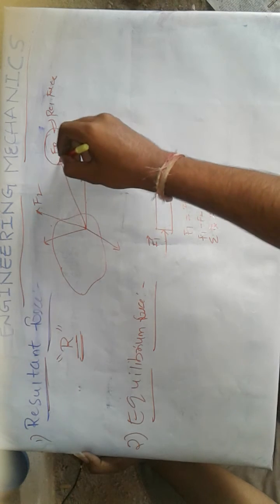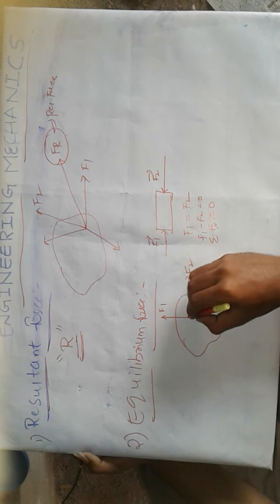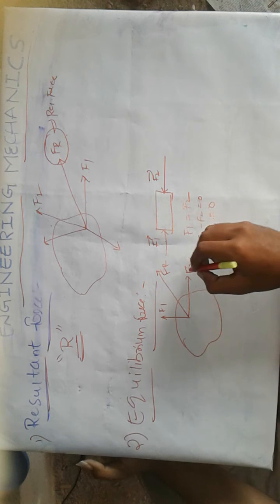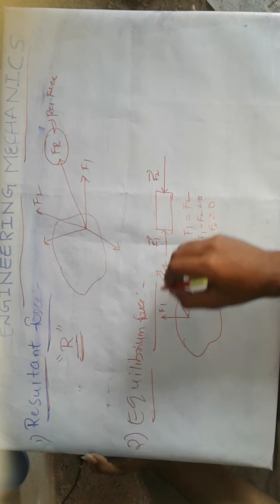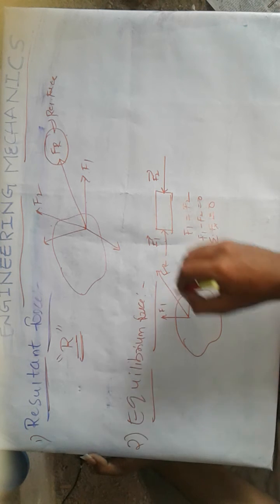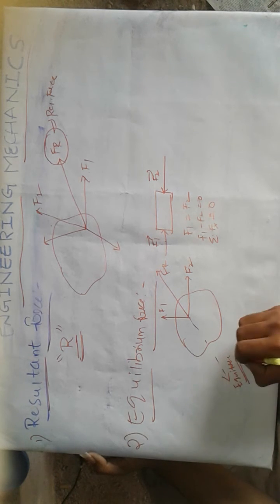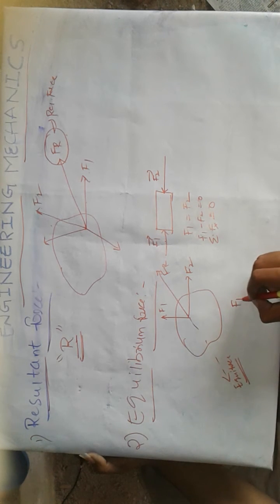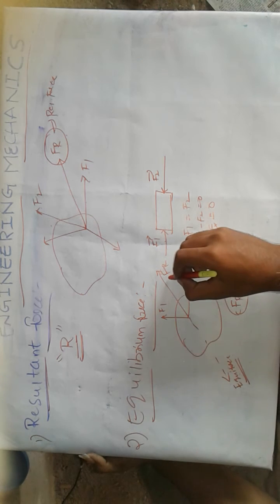In this body, this is the resultant force. Suppose the forces acting on the body are F1 and F2. The resultant force is FR, which is produced by the combined effect of these two forces and has the magnitude of both. To make this body in equilibrium, I should apply a force which is opposite to this resultant force — that is the equilibrium force. We can clearly say that resultant force and equilibrium force are opposite to each other; the resultant force equals the equilibrium force but in the opposite direction.